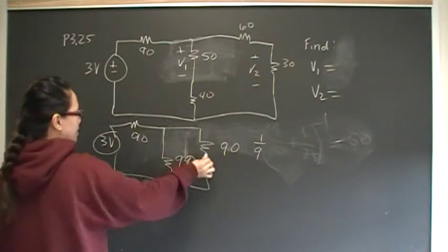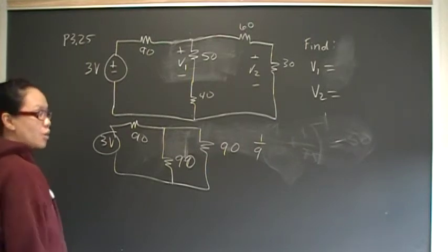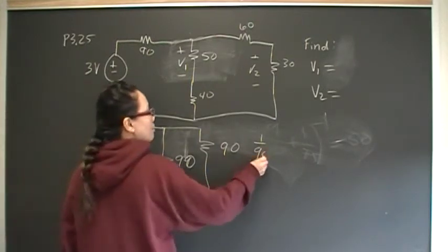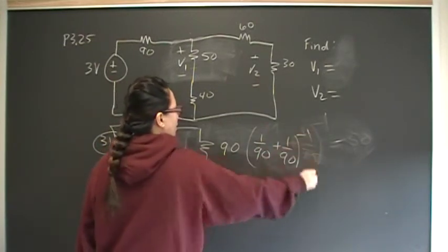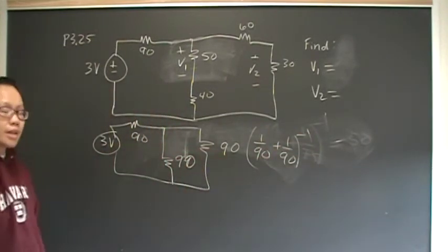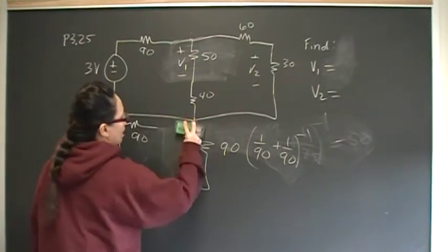But you can look at that and say, okay, I have two identical in parallel with each other. I know the equivalent resistance will be half of that, which will be 45. But the calculation, though, is that, 1 over 90 plus 1 over 90 inverse, which will give you 45. So that then becomes 45.